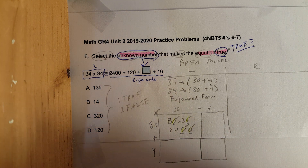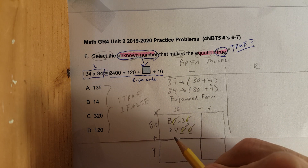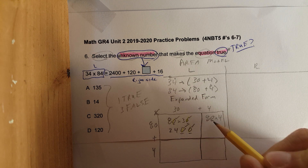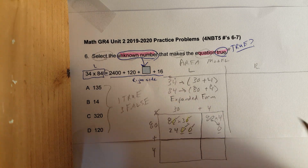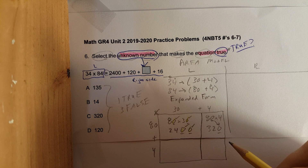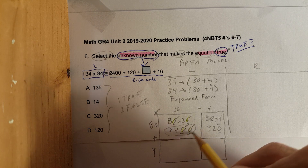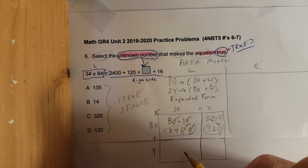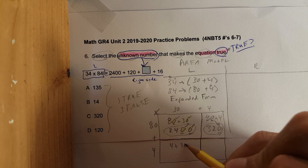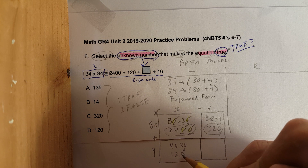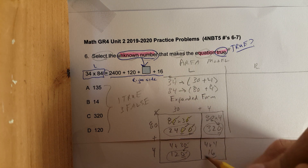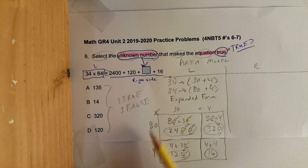By now you should know your math facts: 8 times 3 is 24, so we have 2400. Next box: 80 times 4 — one zero, put the zero down — 8 times 4 is 32, so we have 320. Next box: 4 times 30 — bring down that zero — 4 times 3 is 12, so we have 120. Last box: 4 times 4 is 16.